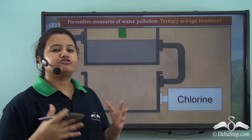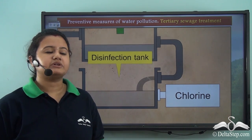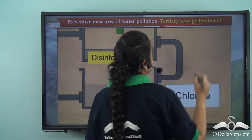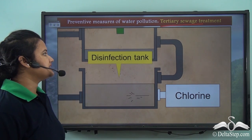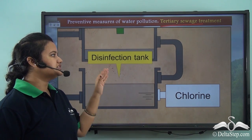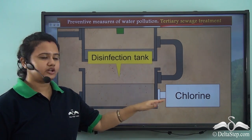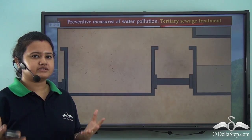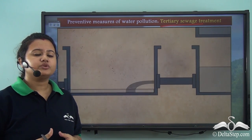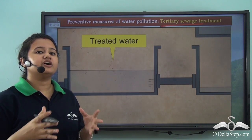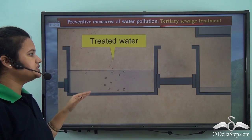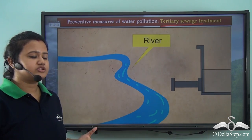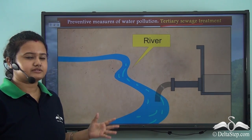The next and final stage of sewage treatment is known as tertiary sewage treatment. In tertiary treatment, the water is held in a disinfection tank rich in chlorine. The chlorine purifies the water so that it is no longer harmful for the environment. This treated water is then released into local water bodies like rivers or canals.